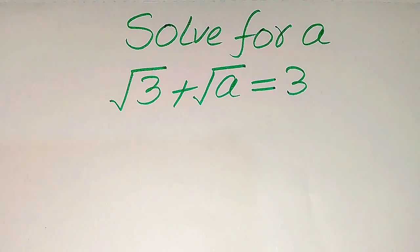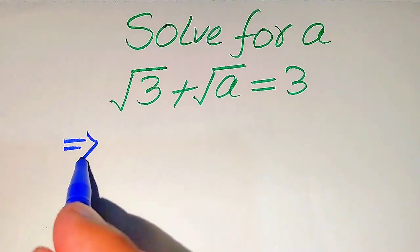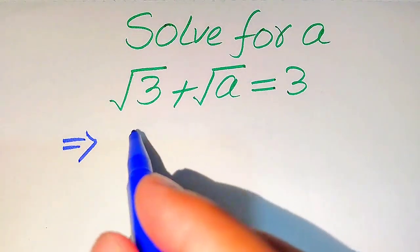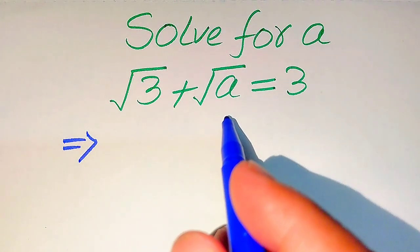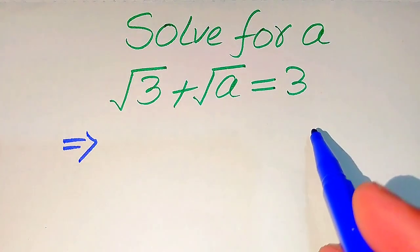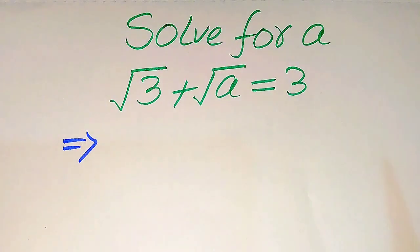Hello everyone. How to solve this problem for the values of 'a', if we have square root of 3 plus square root of a equals 3. We solve this problem for the values of a.